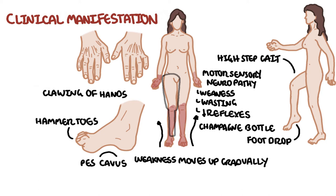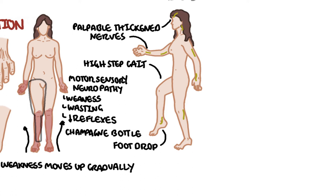Spinal deformities can also occur — people can develop scoliosis or kyphosis. And finally, in Charcot-Marie-Tooth disease, patients often have palpable thickened nerves. These palpable thickened nerves can be found in certain areas of the body, including the elbows, the thigh, and the tibia.